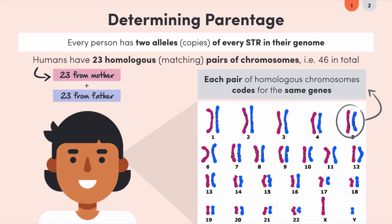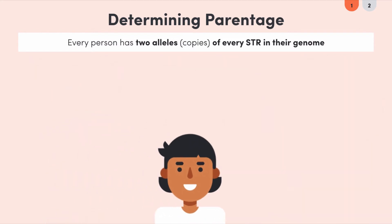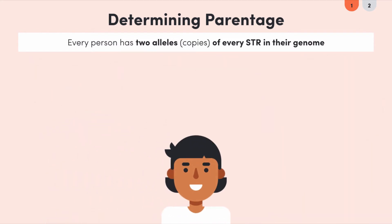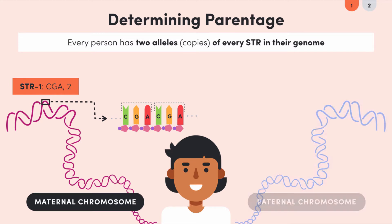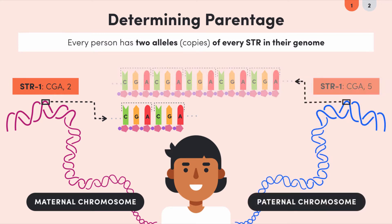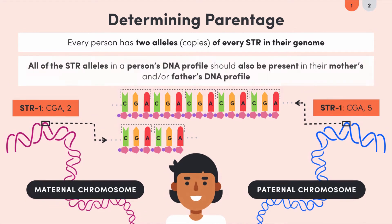For example, this person has an allele for STR1 which has two CGA repeats on the chromosome they got from their mother, and an allele with five CGA repeats on the chromosome they got from their father. Because of this, all of the STR alleles in a person's DNA profile should also be present in either their mother's or father's DNA profiles.